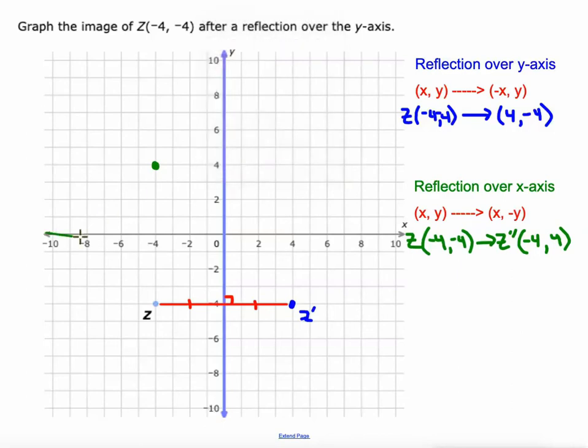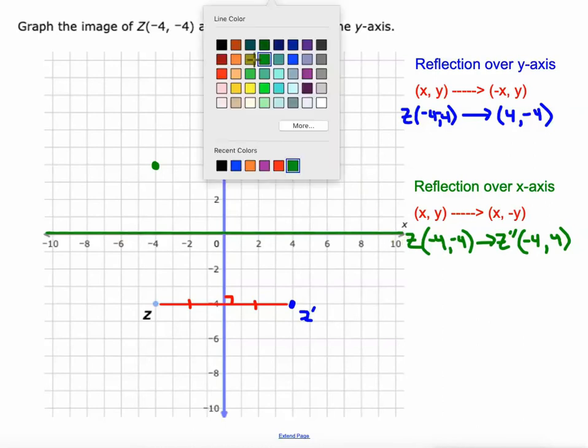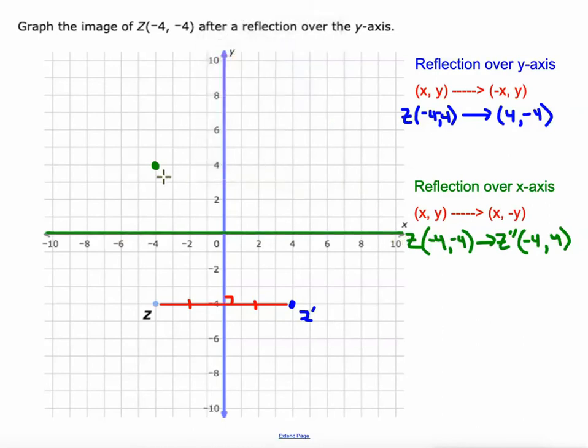If we connect the original to the new image Z prime, a couple things happen. The red line's cut in half by the line of reflection, and it meets the line of reflection at a 90 degree angle. So there's a quick review on reflection over the y and x axis.